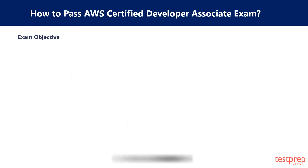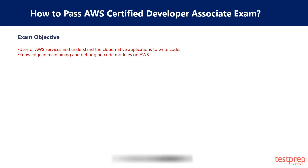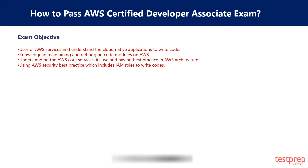Exam Objectives. Candidates giving this exam are validated using the following structure. First, uses of AWS services and understanding cloud-native applications to write code. Second, knowledge in maintaining and debugging code modules on AWS. Third, understanding the AWS core services, their use, and having best practices in AWS architecture. Fourth, using AWS security best practices, which includes IAM rules to write code.